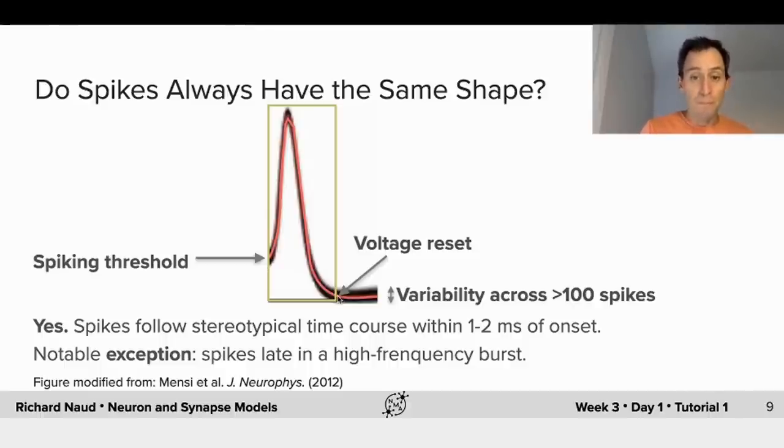the cell always came back to the same voltage, the same membrane potential. And that's our voltage reset. Now, there are a few exceptions. Some cell types do not have those stereotypical action potentials.